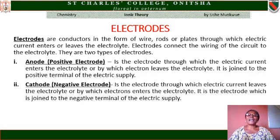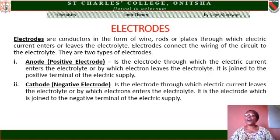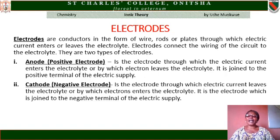Electrodes are conductors in the form of wire, rod, or plates through which electric current enters or leaves the electrolyte. Electrodes connect the wiring of the circuit to the electrolyte. There are two types of electrodes: the anode and the cathode. The anode is the positive electrode — it is the electrode through which electric current enters the electrolyte, and it is joined to the positive terminal of the electric supply. The cathode is the negative electrode — it is the electrode through which electric current leaves the electrolyte, and it is joined to the negative terminal of the electric supply.